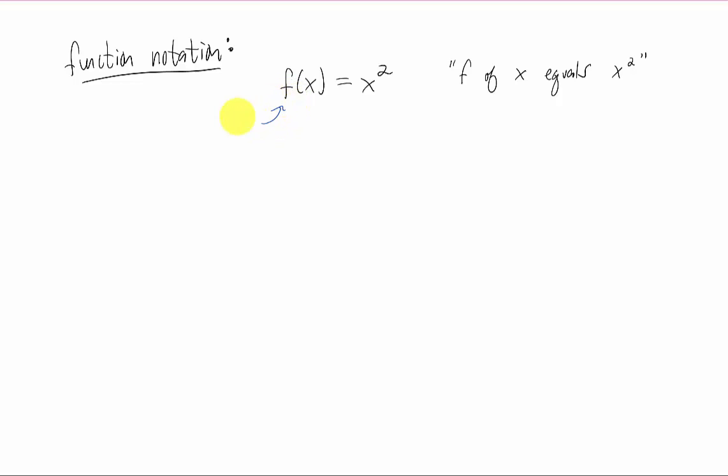In this example, we're naming the function f. In parentheses right next to the name of the function, we write down what our input variable is. And this right hand side tells us what the machine does to that input variable. So what this machine does is it takes an x value, and it squares it, and it spits that out.